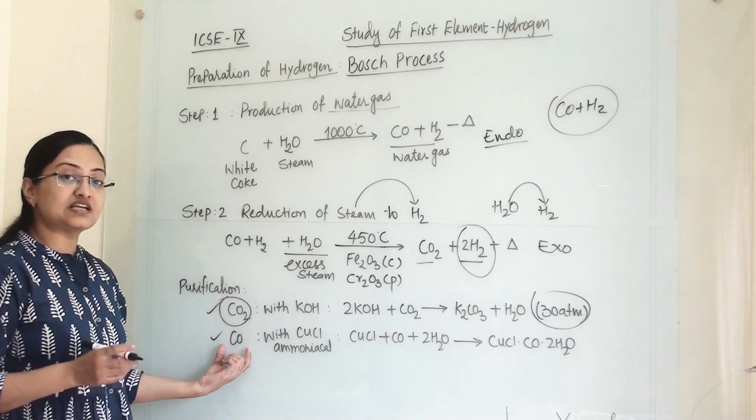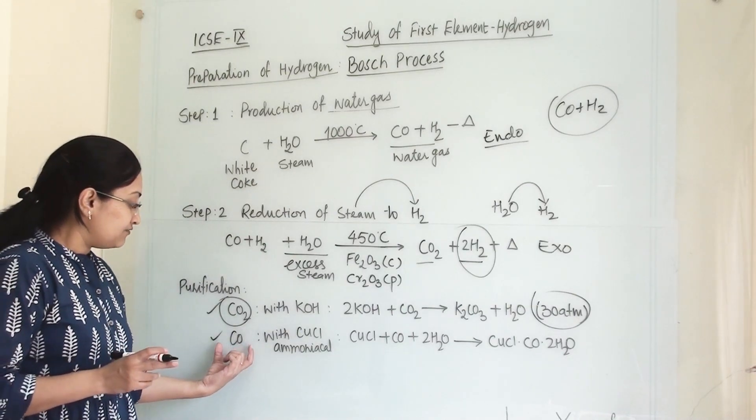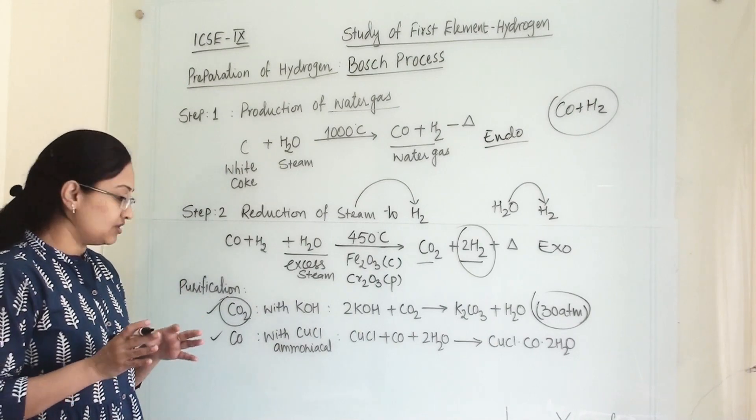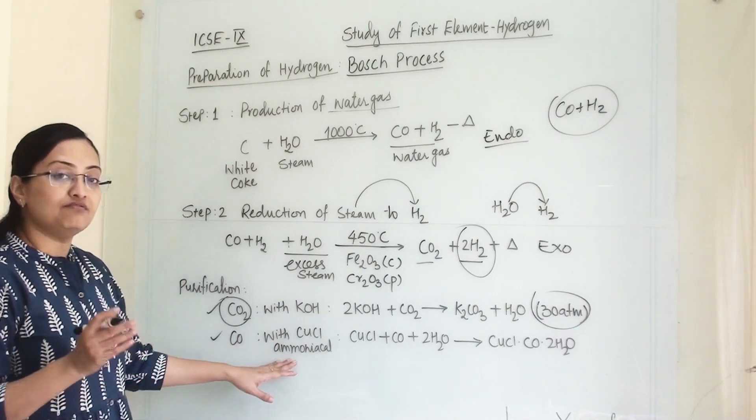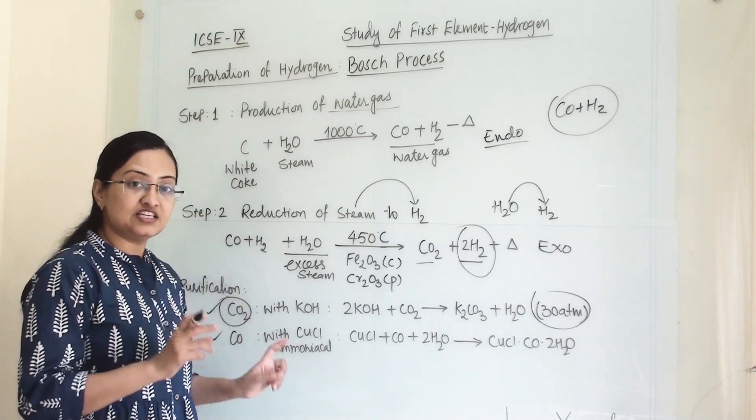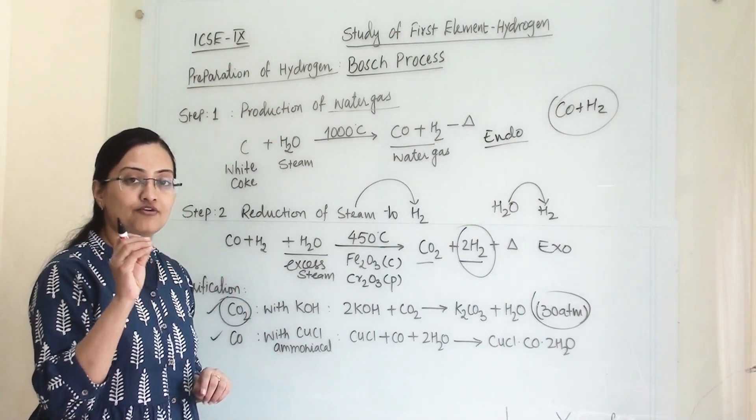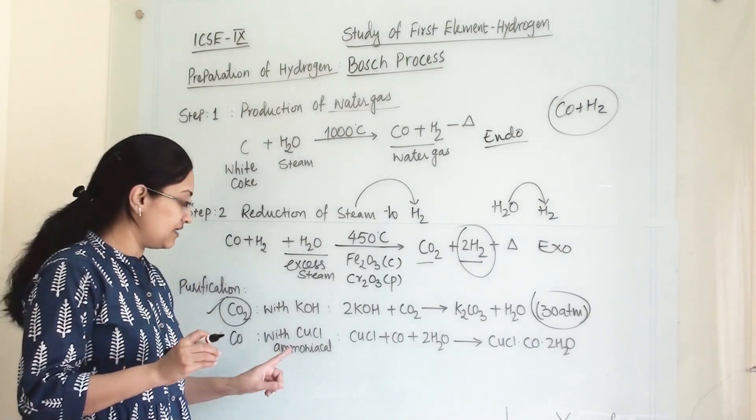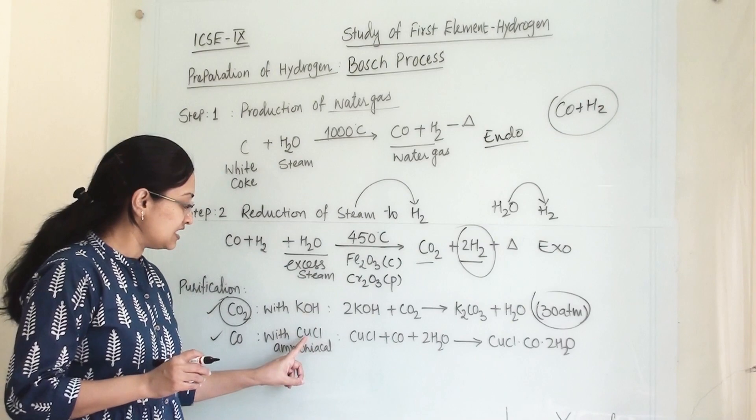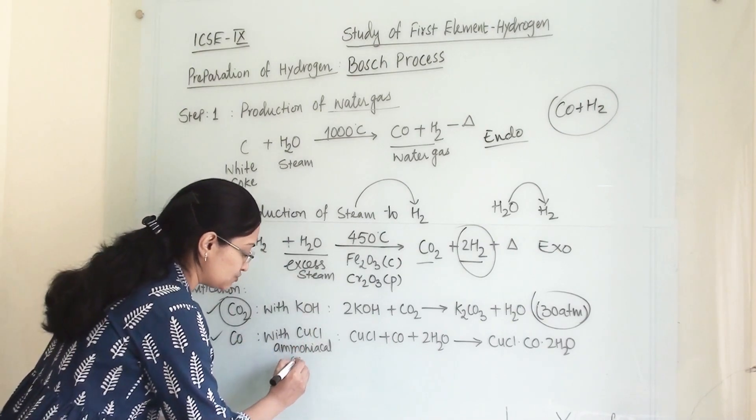Then next is carbon monoxide. Whenever carbon monoxide impurities are there along with hydrogen, we need to arrange a cuprous chloride washer bottle. In this solution we are adding a little traces of ammonia. So this becomes ammoniacal cuprous chloride. This is cuprous chloride where copper's valency is 1.